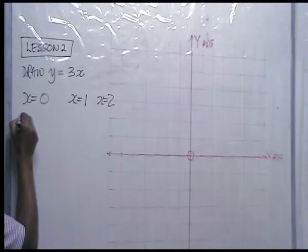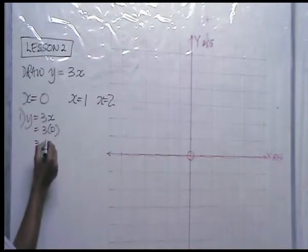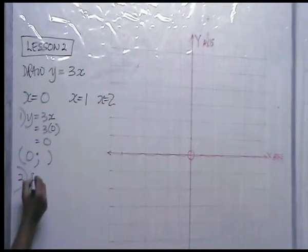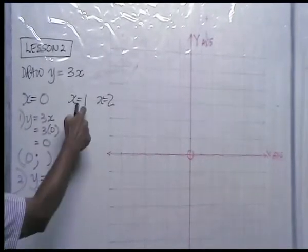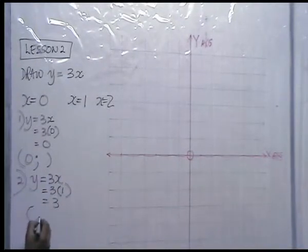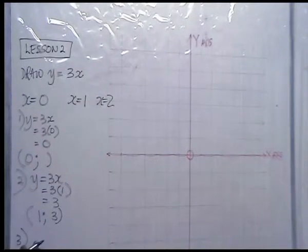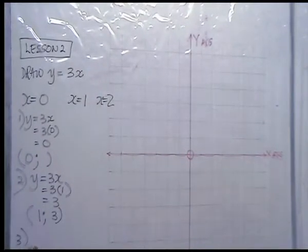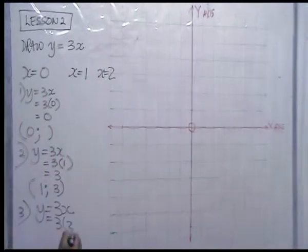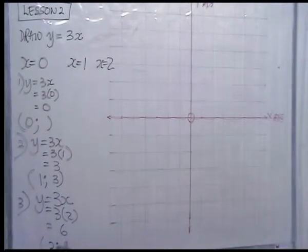For x is zero: y is equal to three times zero, which is zero. First ordered pair: zero, zero. For x is one: y is equal to three times one, which is three. Second ordered pair: one, three. For x is two: three times two is six. Third ordered pair: two, six.